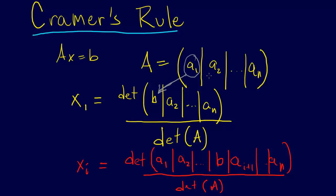So we substitute that with B, and all the other ones just stay exactly the same. And then on the denominator we always have the determinant of A.